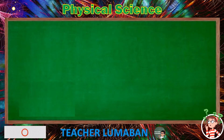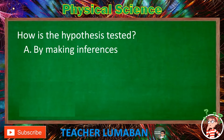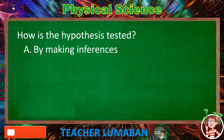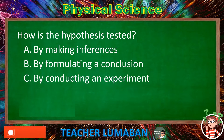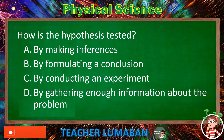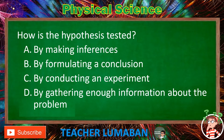How is the hypothesis tested? Letter A: By making inferences. Letter B: By formulating a conclusion. Letter C: By conducting an experiment. Letter D: By gathering enough information about the problem. Choose the suitable answer based on the given choices in 5 seconds.